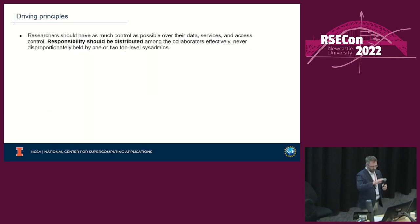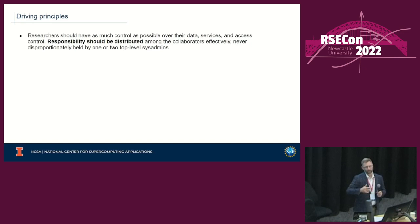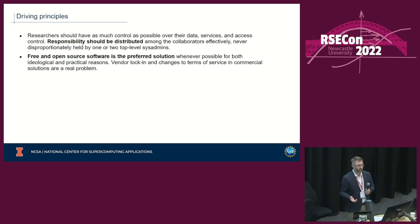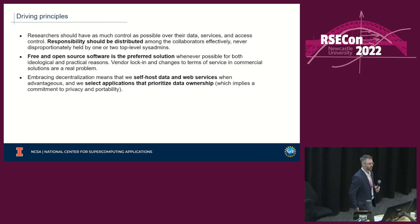With that general idea of decentralization in mind, here are some driving principles guiding our design choices. Researchers should have as much control as possible over their data, services, and access control. Responsibilities should be distributed among collaborators — never disproportionately held by one or two sysadmins. Free and open-source software is the preferred solution whenever possible, for both ideological and practical reasons, as vendor lock-in and changes to terms of service are a real problem for academic researchers.